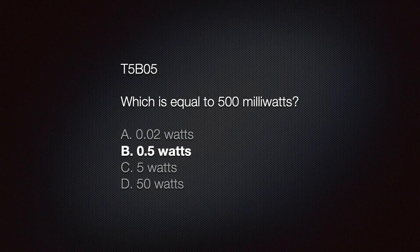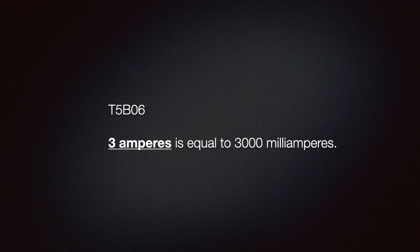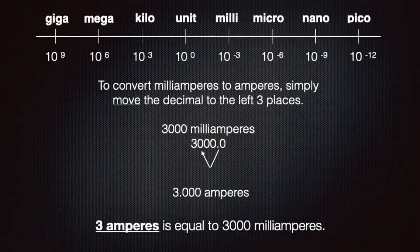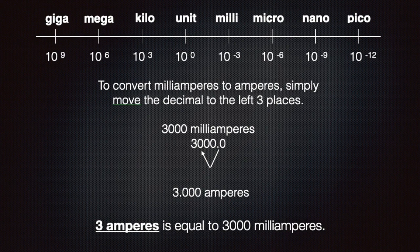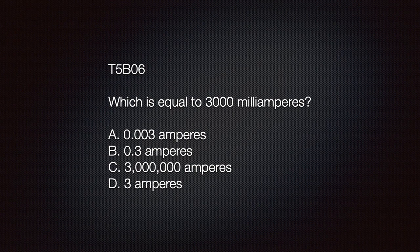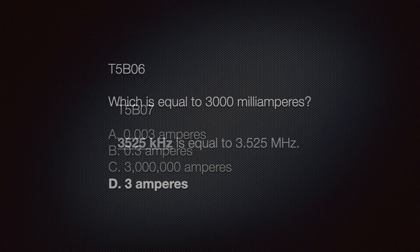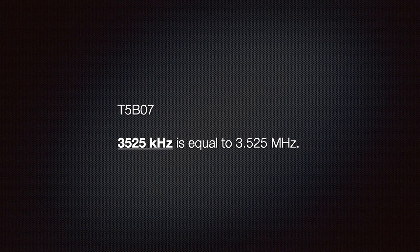The answer is B, 0.5 watts. We should know that 3 amperes is equal to 3000 milliamperes. To convert milliamperes to amperes, simply move the decimal to the left three places. The test question is: which is equal to 3000 milliamperes? A) 0.003 amperes, B) 0.3 amperes, C) 3 million amperes, or D) 3 amperes.